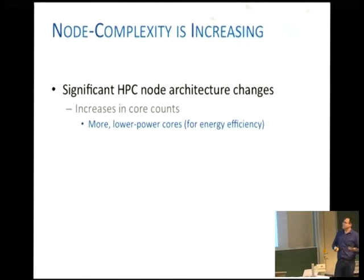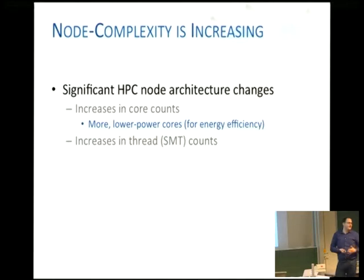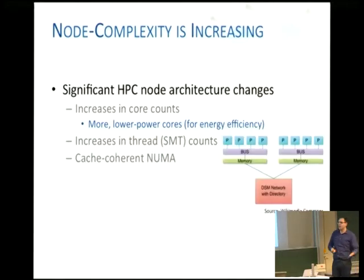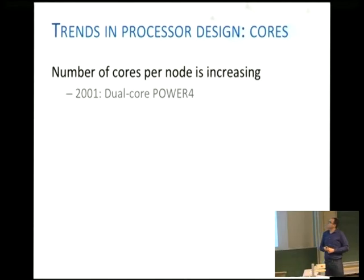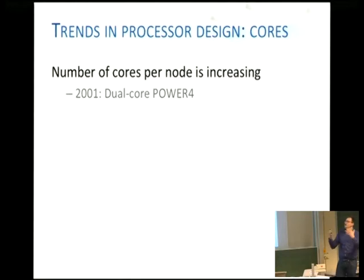Node complexity is also increasing. We have large changes happening in HPC nodes — large numbers of threads with Xeon Phi, for example, and cache-coherent NUMA. What we want to do is optimize for efficiency of our software. We've seen these numbers of cores per node increasing as a trend in computer architecture.